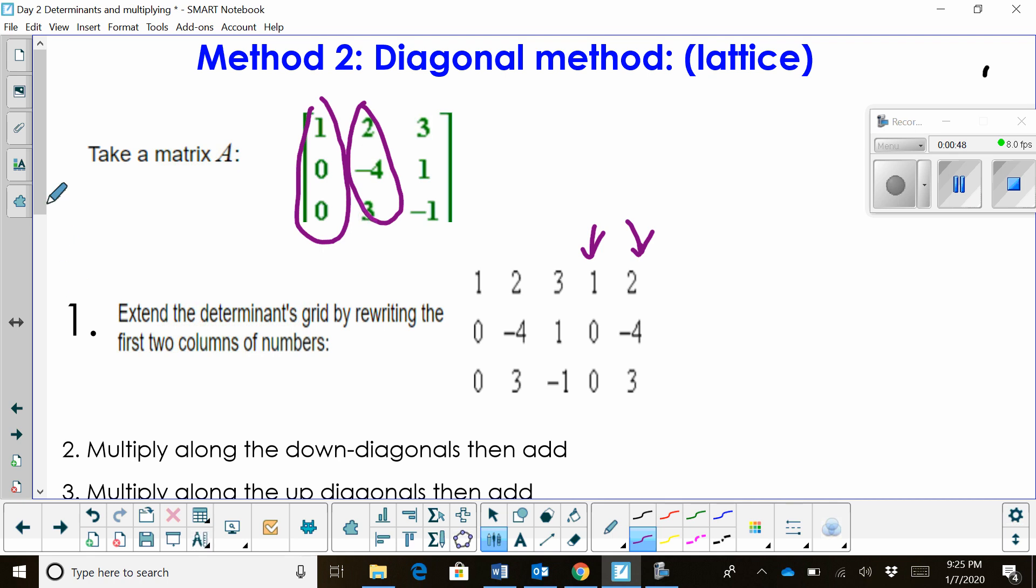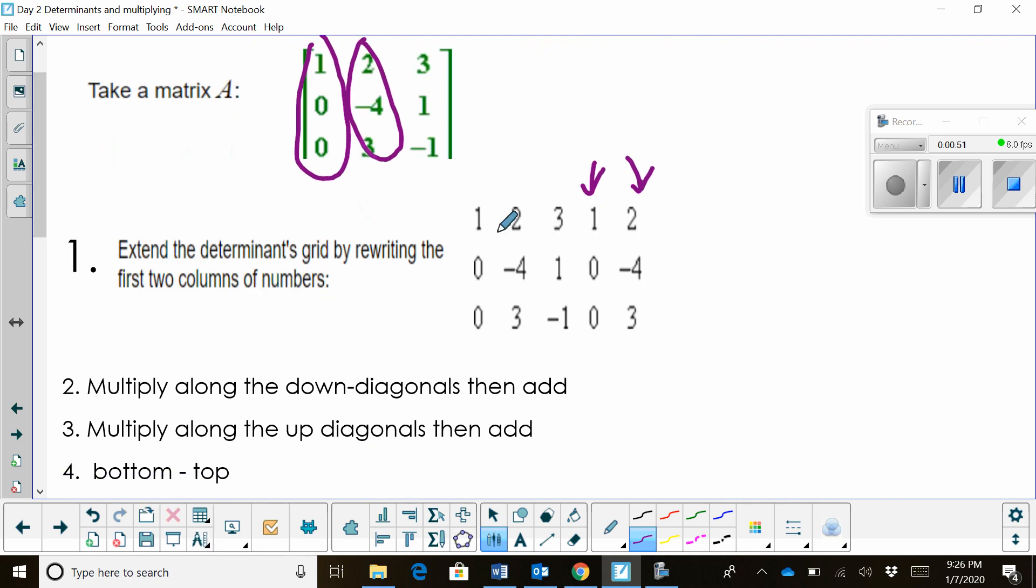Now what we're going to do is start in the upper left corner and multiply down this first diagonal. So I'm going to take 1 times negative 4 times negative 1, and that product is positive 4.